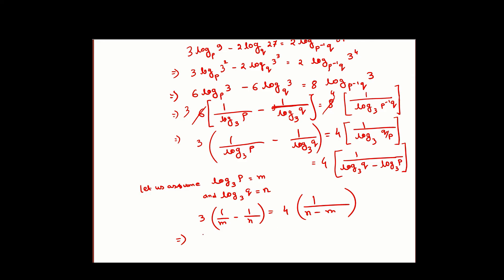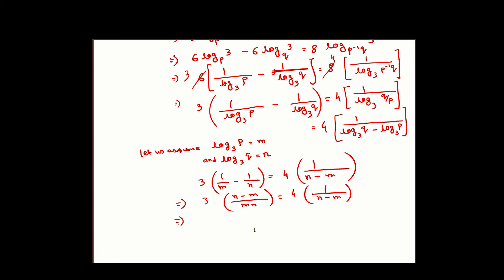If we take N minus M to this side, we will get (N minus M) squared equals 4MN. If we simplify this thing, we will get N squared plus M squared minus 2MN equals 4MN. If we take everything to the same side, we will get N squared minus 6MN plus M squared equals 0.